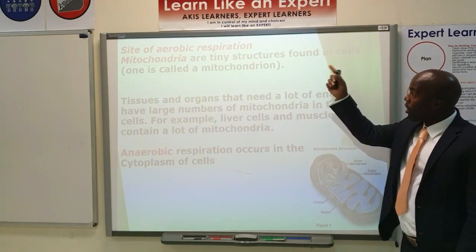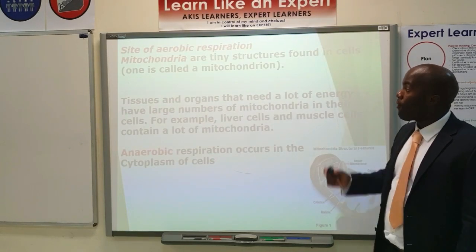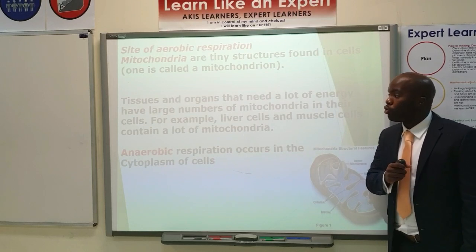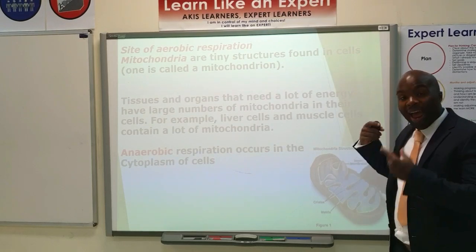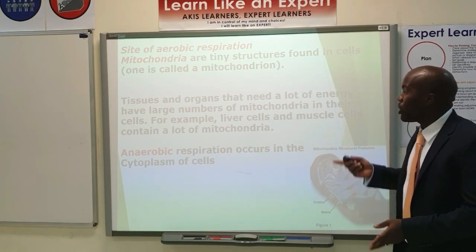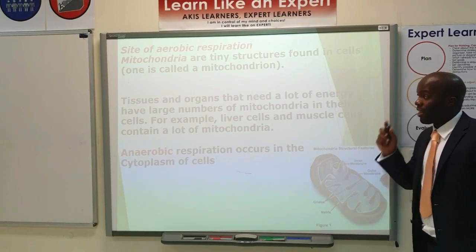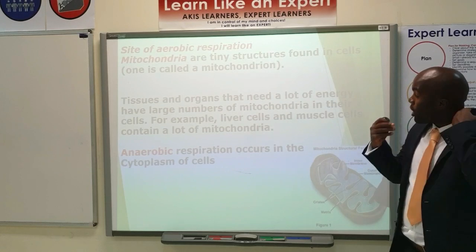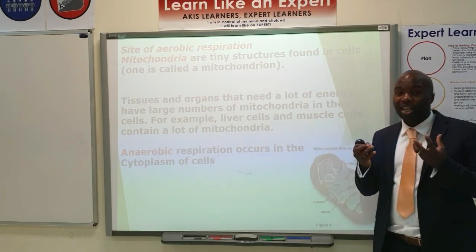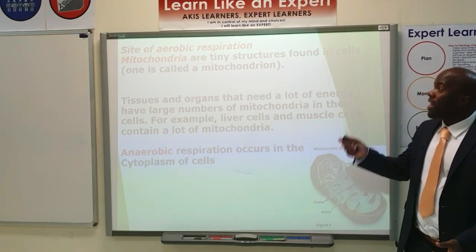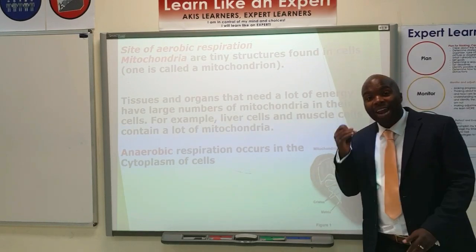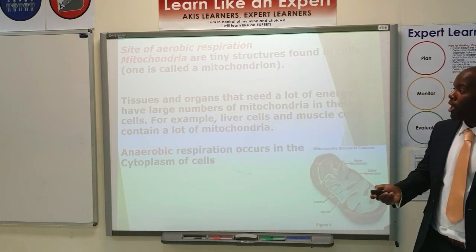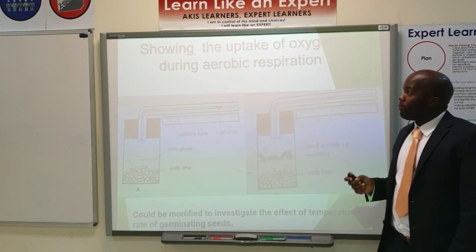The site of aerobic respiration is the mitochondria, whereas anaerobic respiration occurs in the cytoplasm of cells. This means that tissues and organs that require a lot of energy will have a high number of mitochondria.